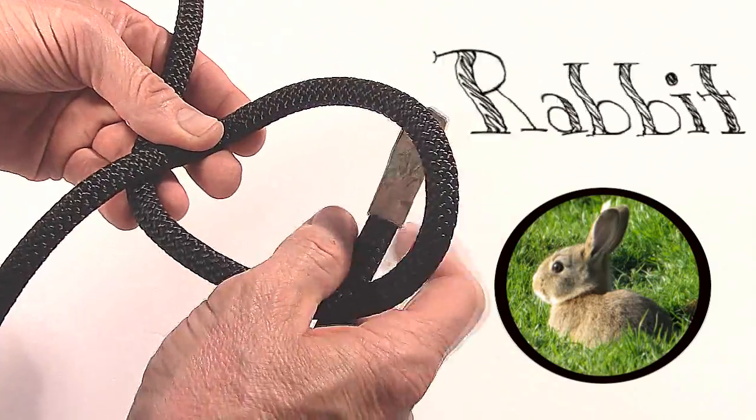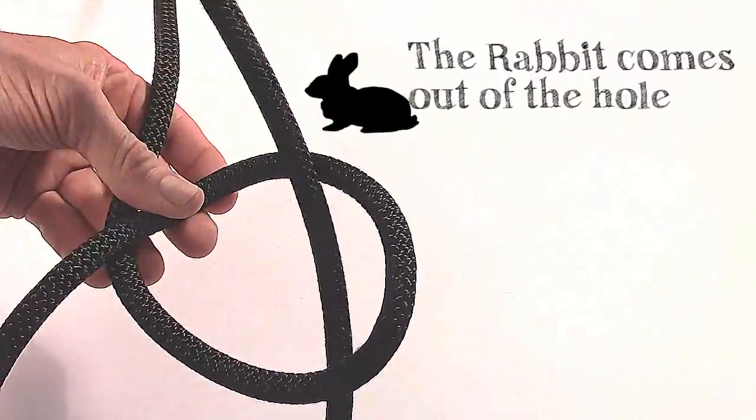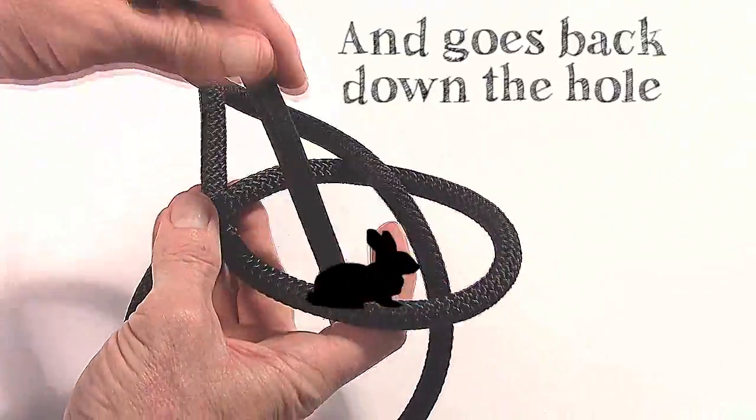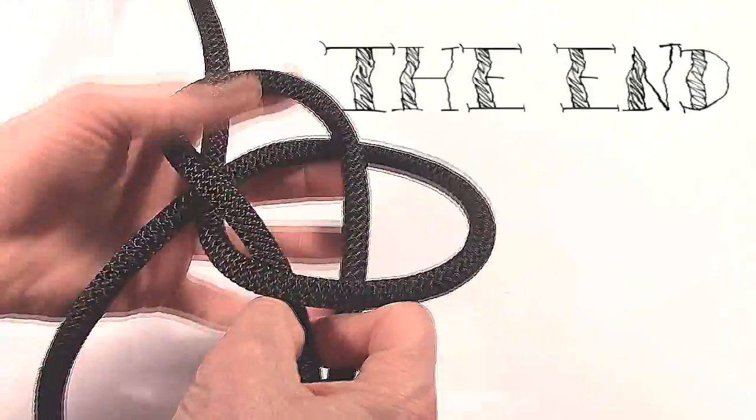Okay, follow me along here. The rabbit comes out of the hole, goes around the back of the tree, and goes back down the hole. The end.